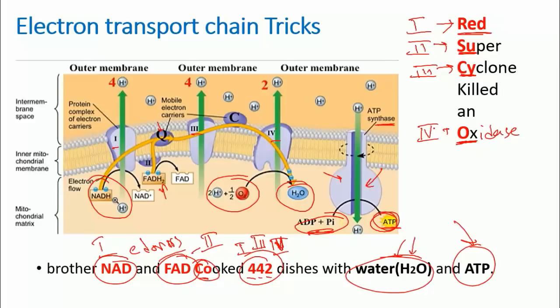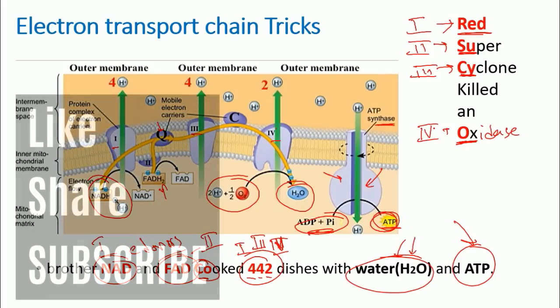So that's all about the four separate complexes: NADH-coenzyme Q oxidoreductase, complex two succinate dehydrogenase, complex three cytochrome bc1 complex, and complex four cytochrome c oxidase. That's how you can remember the names of the complexes as well. So that's quite easy if you remember a bull with the cyclone killing that ox, and also in this case some good dish by NAD and FAD.